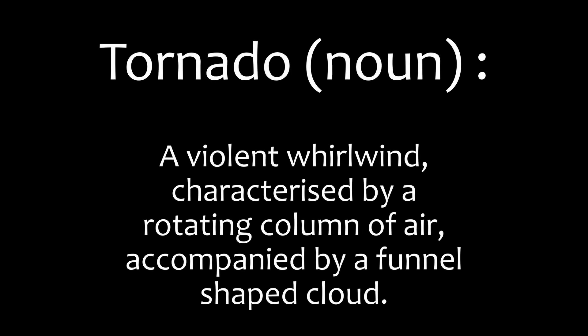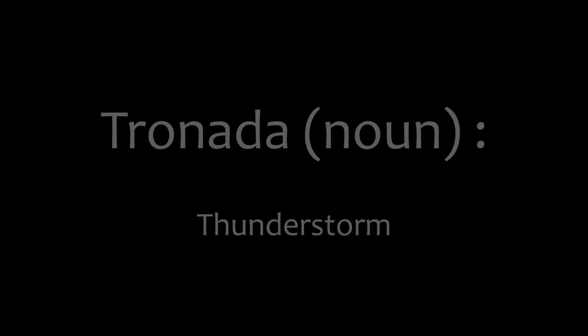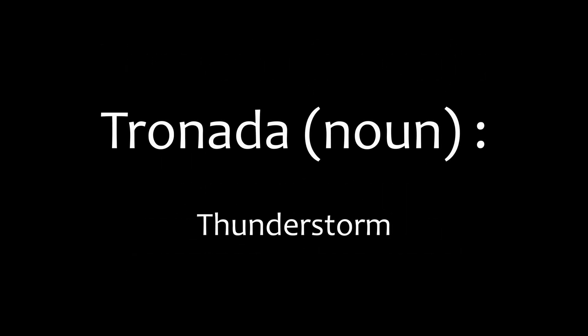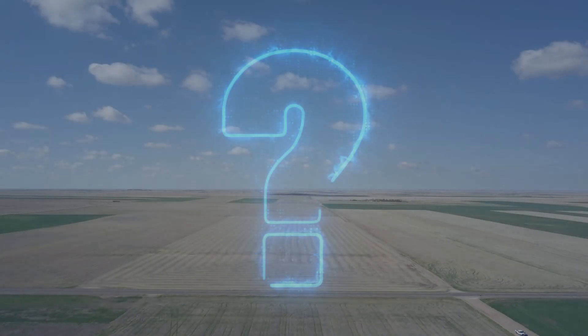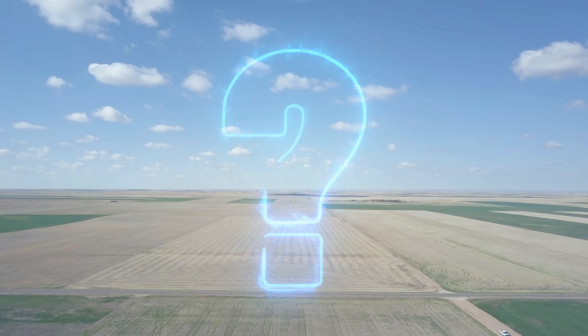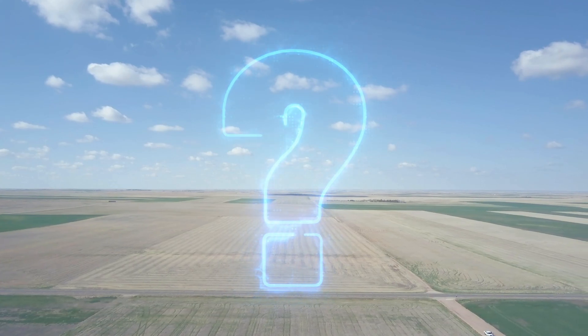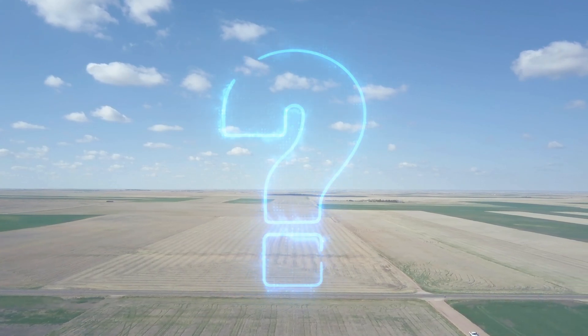Tornado — a violent whirlwind characterized by a rotating column of air, accompanied by a funnel-shaped cloud. The term likely derives from the Spanish word tronada, meaning thunderstorm. But how do tornadoes and the thunderstorms that produce them form?